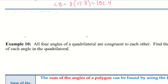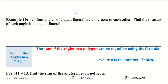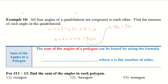Let's go to the last page of our notes. Example 10: all four angles of a quadrilateral are congruent to each other — find the measure of each angle. Since all four angles are equal, let them all equal x: x plus x plus x plus x equals 360, so 4x equals 360, divide by 4, and x equals 90. This makes sense — think of a square or rectangle, where all angles are 90 degrees.